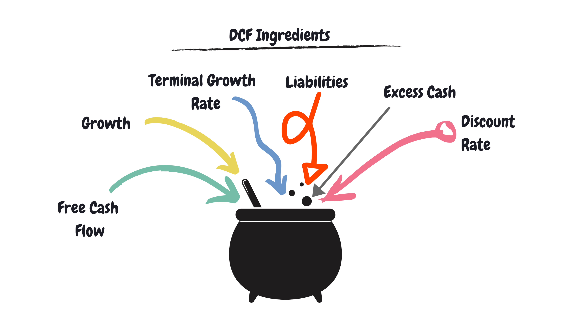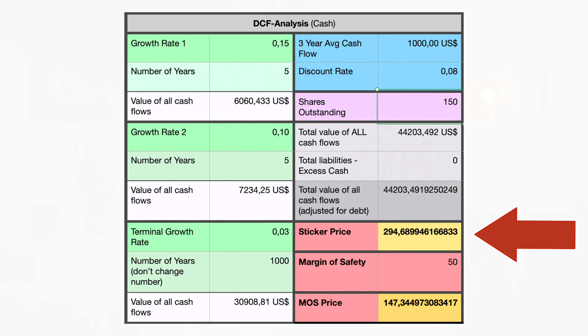And if you want to calculate the intrinsic worth per share, you would also need the total number of shares outstanding. If you plug all of these variables into a DCF model, the model will give you the intrinsic value of the company or the asset.